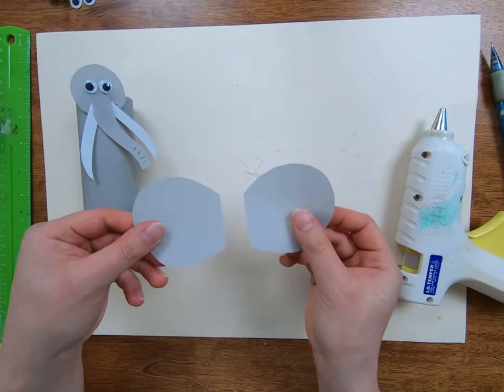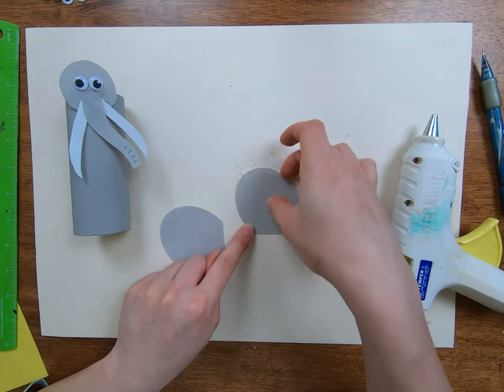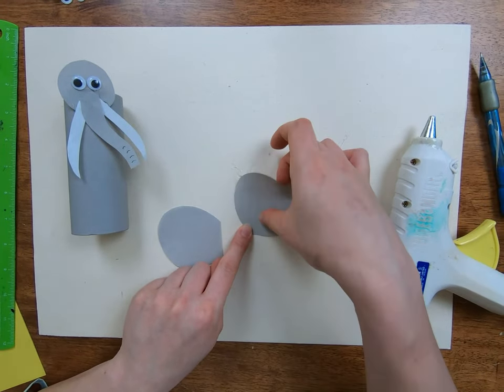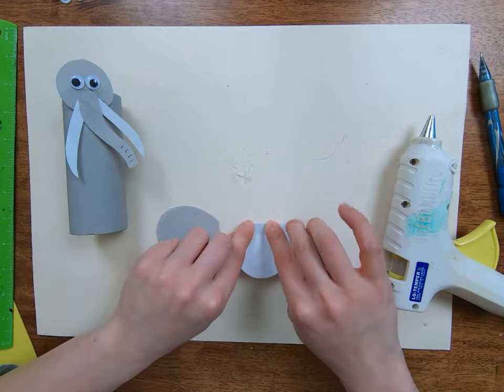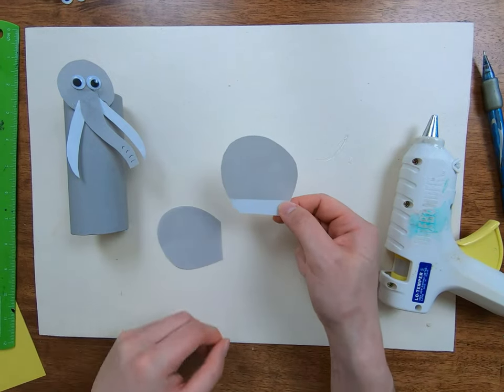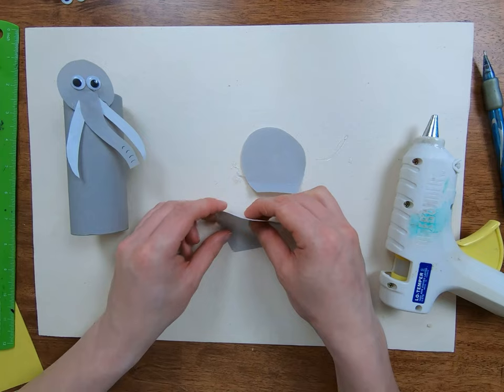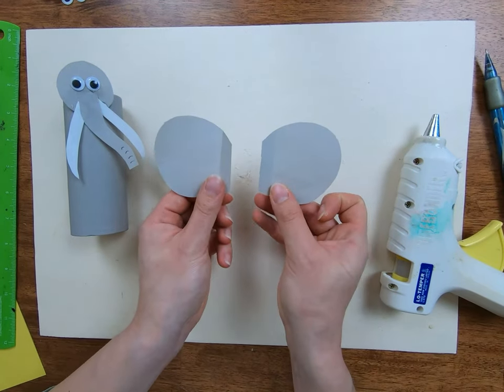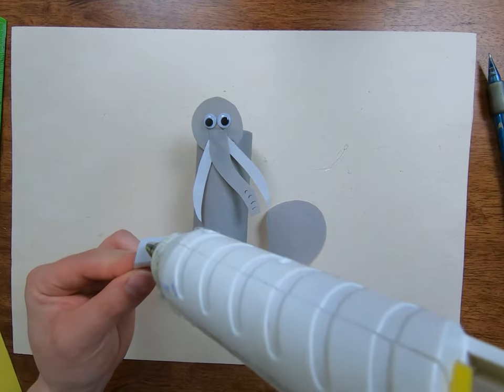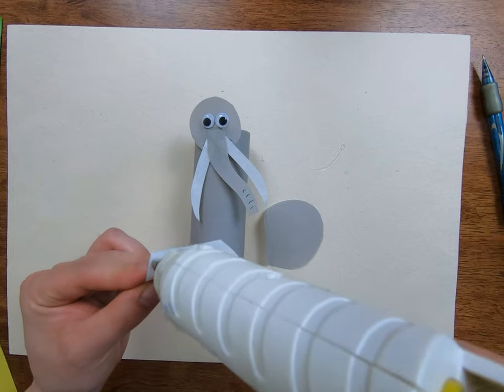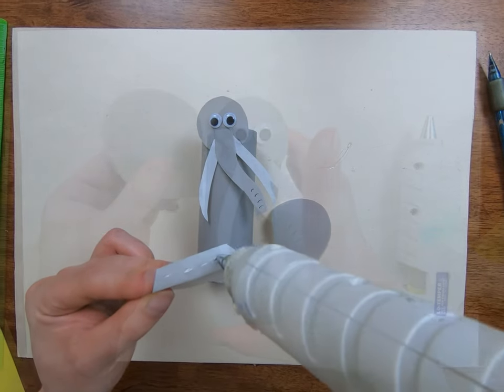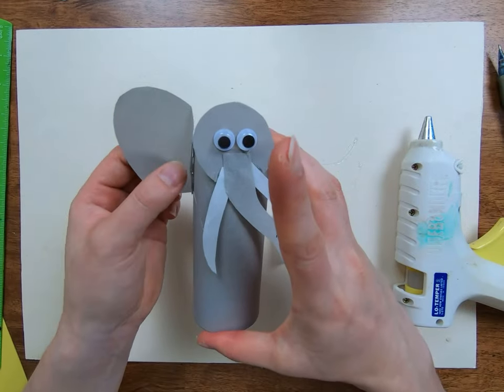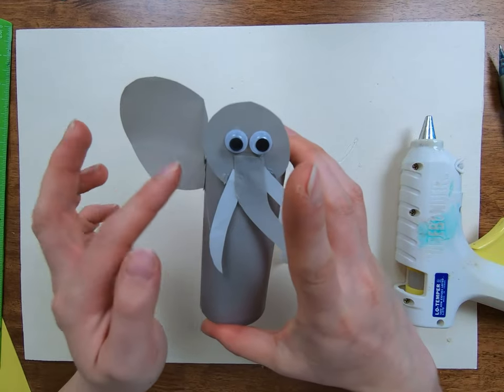The final step is to attach the ears. Take one ear and fold it along the straight edge towards you. This line will help the ear stick out from the body. Do the same thing on the opposite side. Let's glue them onto the elephant. Let's put a thin line of glue along each ear. And press it down on the body. One ear on each side.